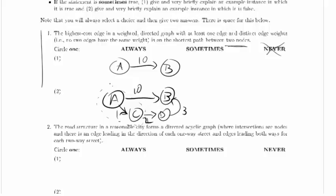Fortunately, we don't have to worry about that because right here we can show that this highest cost edge is not on the shortest path between any two nodes, so definitely the answer is sometimes.